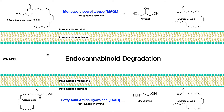That's pretty much it for endocannabinoid degradation — really just one enzyme per each: monoacylglycerol lipase for 2-AG and FAAH for anandamide. The somewhat difficult thing to remember might be which cell each endocannabinoid is taken up into. 2-AG goes into the presynaptic cell or neuron, and anandamide goes into the postsynaptic cell. And then they're metabolized there.